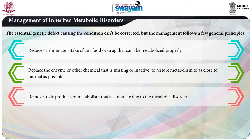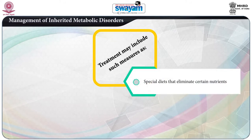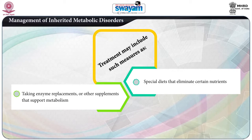The third approach is to remove the toxic products of metabolism that accumulate due to the metabolic disorders. Treatments may include special diets that eliminate certain nutrients, enzyme replacement or other supplements that support metabolism, and treating the blood with chemicals to detoxify dangerous metabolic by-products.